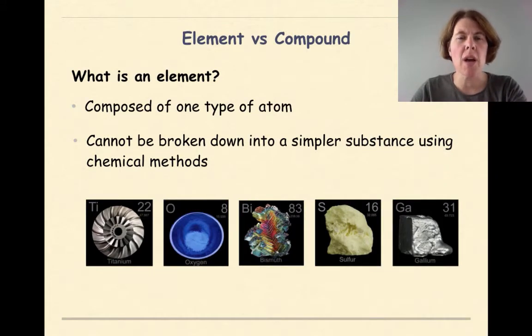So the first thing that we need to do is talk about elements versus compounds. What is an element? Elements are composed of only one type of atom. Elements cannot be broken down into a simpler substance using chemical methods. So in our world in chemistry, the simplest form of an element is an atom. We have some different examples: titanium, oxygen, bismuth, which I always think is fascinating looking, sulfur, and finally gallium. These are all examples of one type of atom that make up an element.